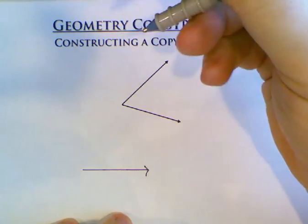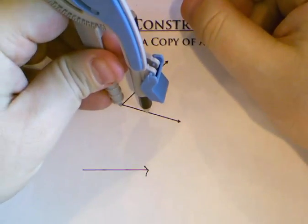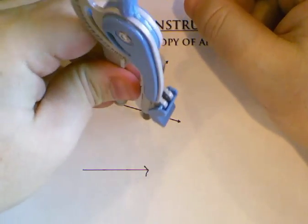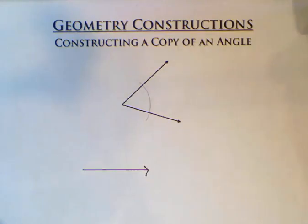Once you have your compass opened up to whatever size that you like, come over to the angle that we're going to copy and we're going to make an arc which crosses both sides of the angle.